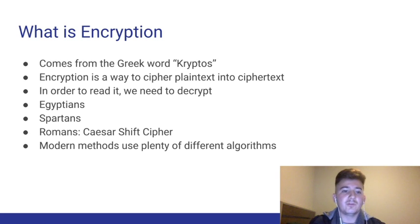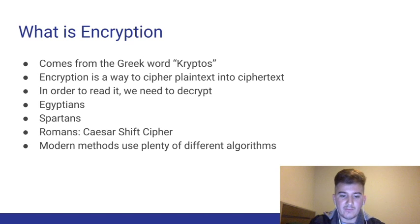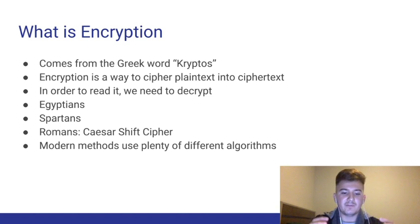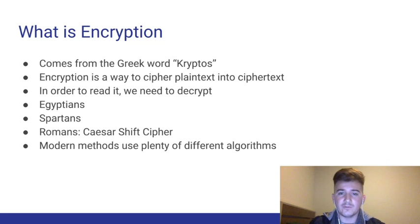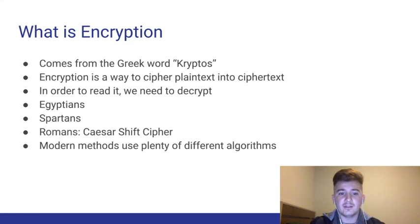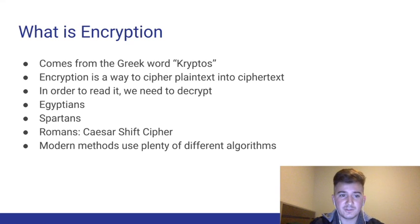What the Romans would do is they would use the Caesar shift cipher. Basically what this means is that you would take a message and shift every letter by a certain number of characters. So if you chose the number 2 and the letter was A, the letter would now be C. You would do this for all letters in the entire message.